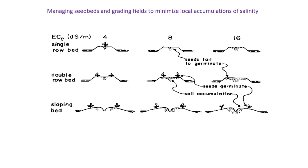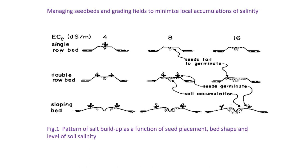This photograph indicates the pattern of salt build-up as a function of seed placement, bed shape and level of soil salinity. Formation of salt depends on seed placement, bed shape and level of soil salinity, which helps manage seed bed and grading fields to minimize local accumulation of salinity. There are different types of cultivation: single row bed, double row bed and sloping, with different percentages of salt formation in each type of bed.